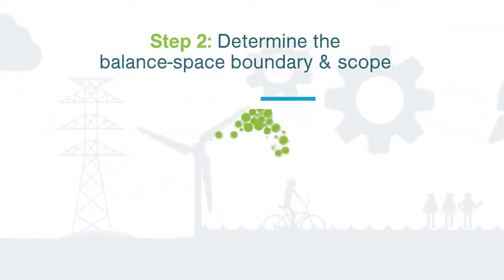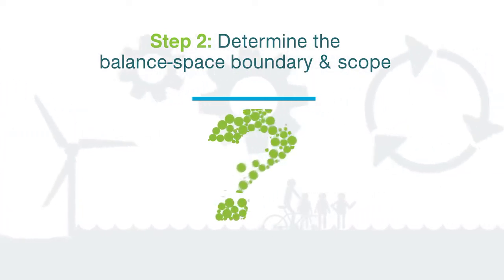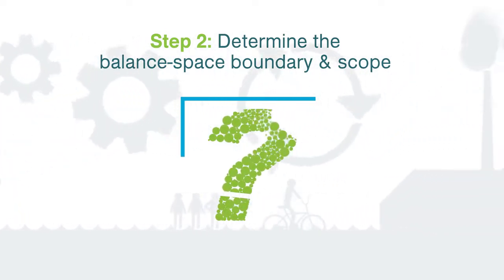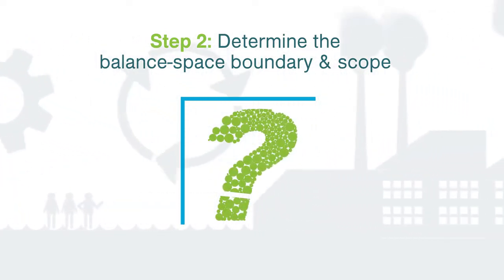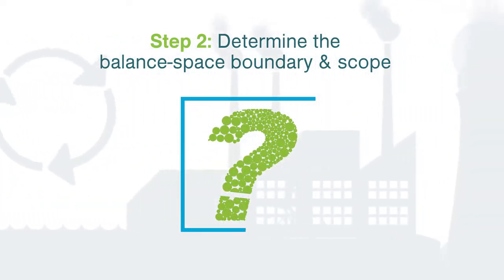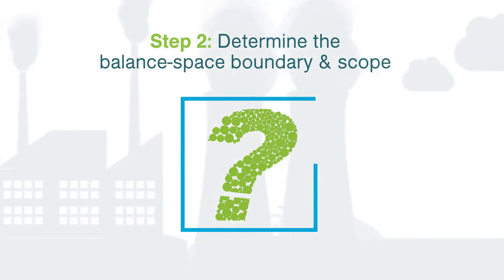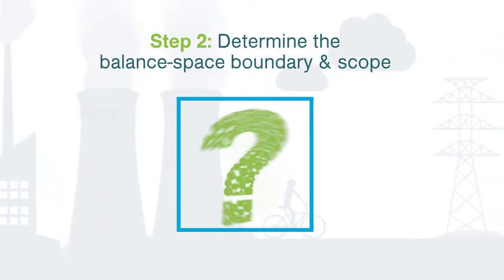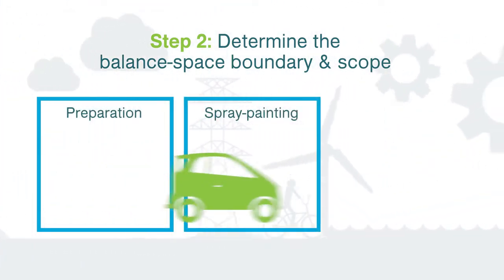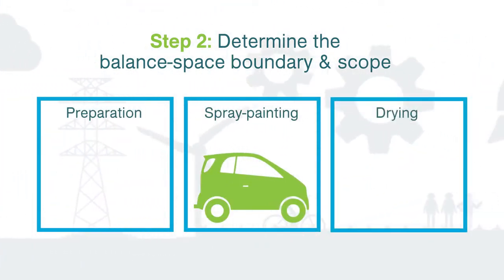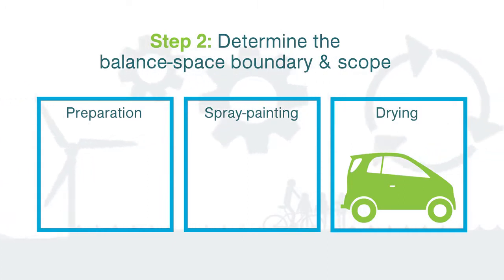Step 2: determine the balance space boundary and scope. In our instance, the boundary has been set to include the preparation, spray painting and drying chamber.